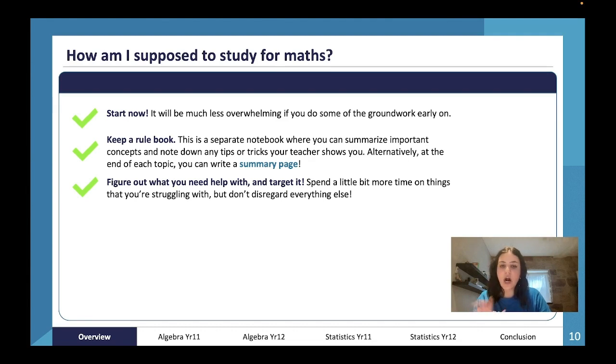Is that there's kind of two types of revision: active revision and passive revision. So active revision is revision that actively targets the content and is an active form of addressing it. So reading your textbook is passive revision because you're just passively engaging with the content.